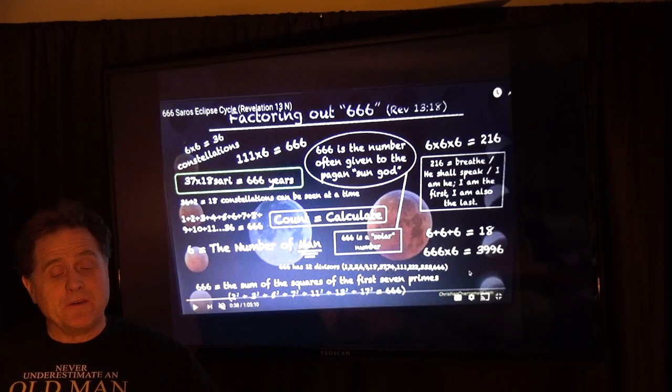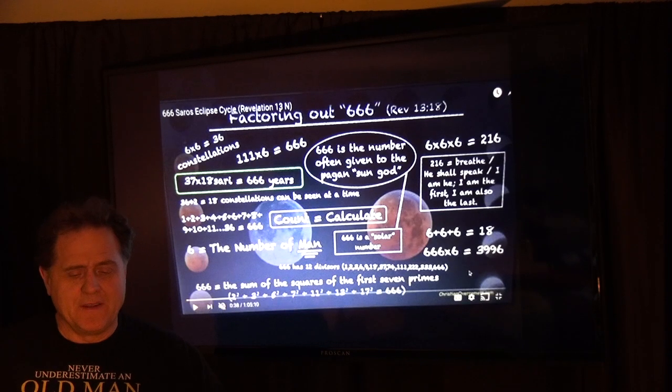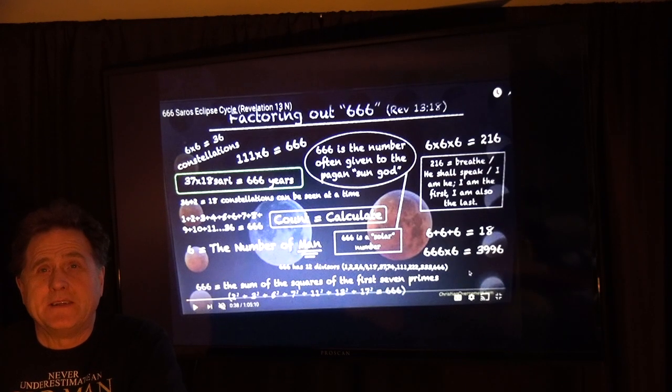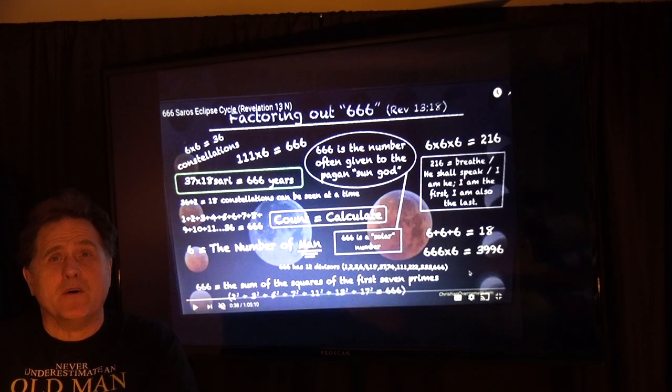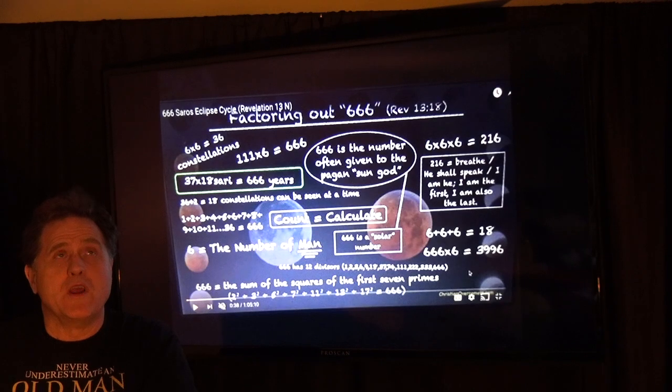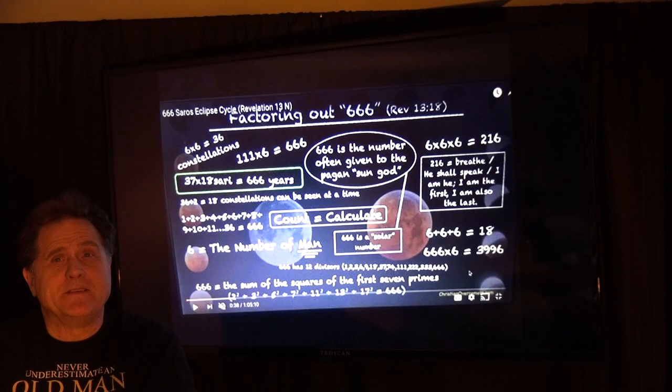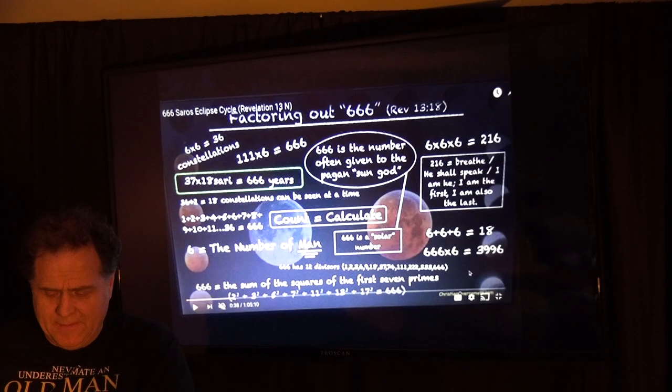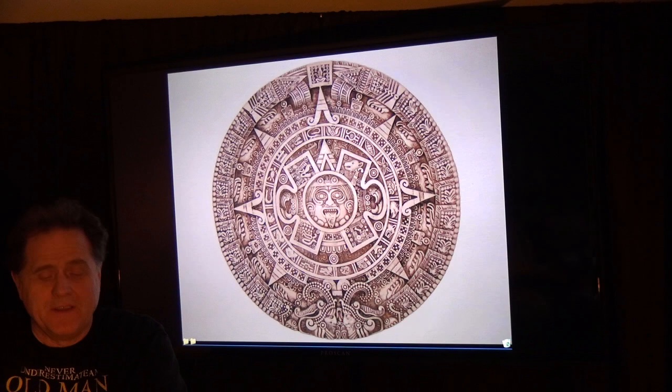It's the sun number. 666 is the number often given to the pagan sun god. Gotta watch out for them pagans. Pagans have been right more and more every day we look into the pagan wisdom. Lo and behold, they were carrying the knowledge from way, way back. Bringing it forth, they had something to say. But there was a war against them, divide and conquer, whatever you want to call it.